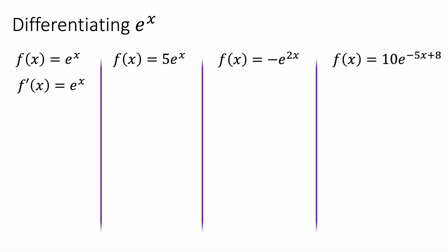Let's look at some other examples. f of x equals 5 e to the power x differentiates to be itself. And that's true for any number times e to the power x. Whether it's positive or negative, it will just be the same thing.